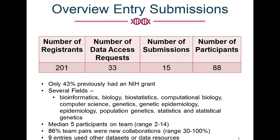Over 200 people registered for the challenge, and 33 teams were approved for data access in dbGaP. This resulted in 15 submission entries with 88 participants across those teams. Only 40% of participants had ever had an NIH grant, and they came from diverse fields including biology, genetics, statistics, and computational biology. The median team size was five individuals, over 80% of team pairs were new collaborations, and nine entries integrated other datasets beyond the dbGaP data.